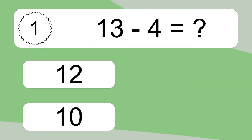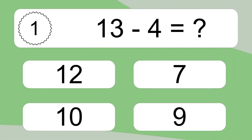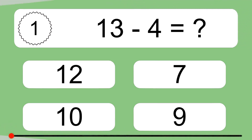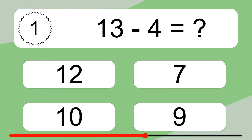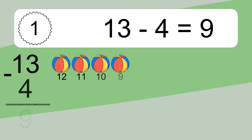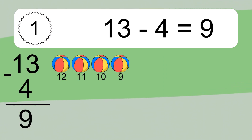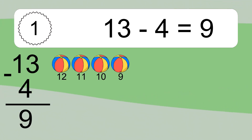13 minus 4 equals what? 13 minus 4 equals 9. Let's count it: 12, 11, 10, 9.